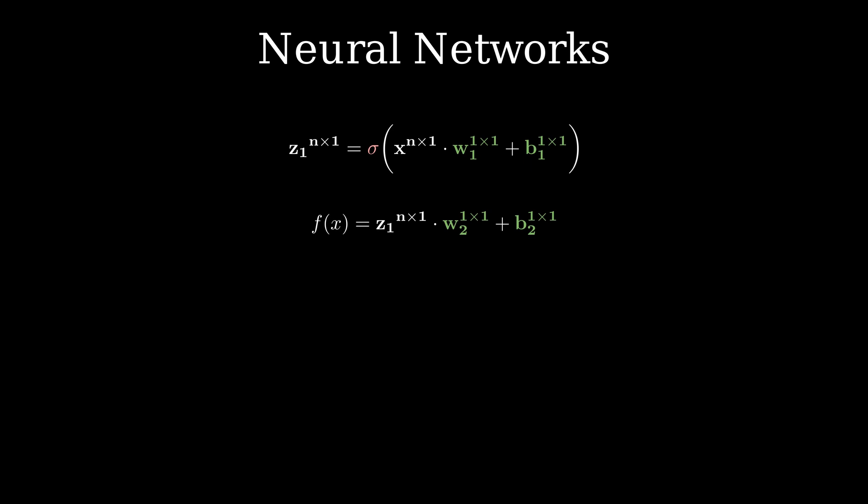Neural networks are highly flexible and we can increase the number of parameters by simply adjusting the dimension of the matrices W1 and B1. In this case, I have made the matrix three-dimensional resulting in a neural network with 10 parameters.